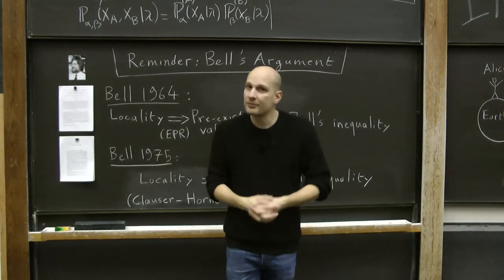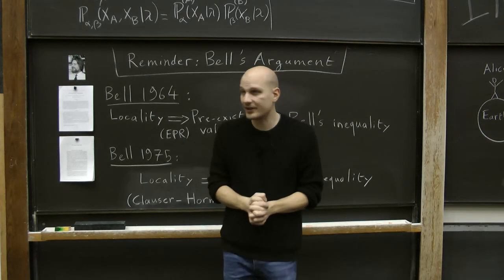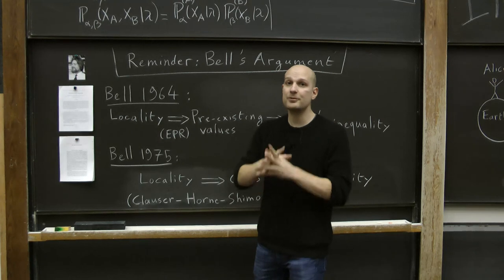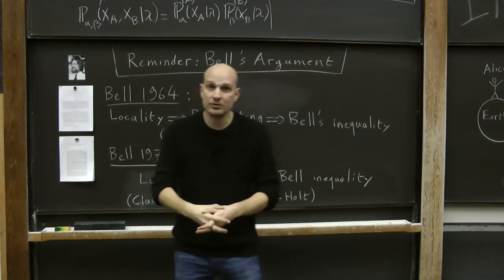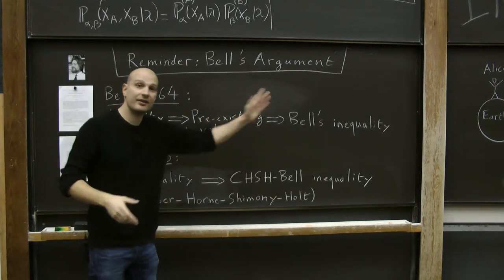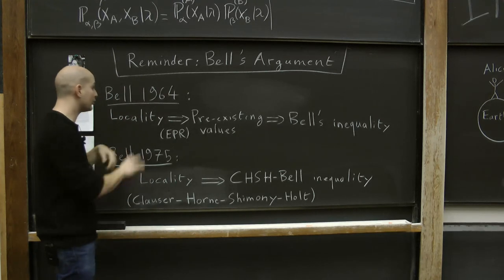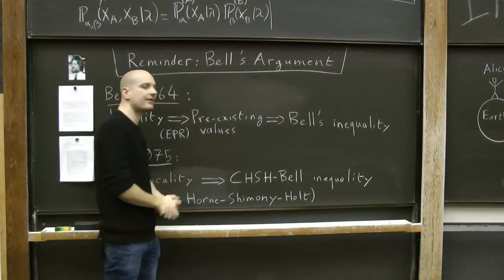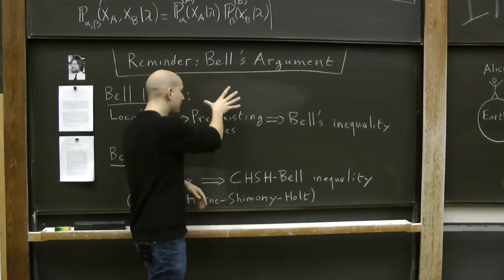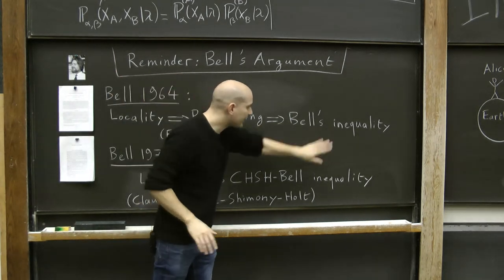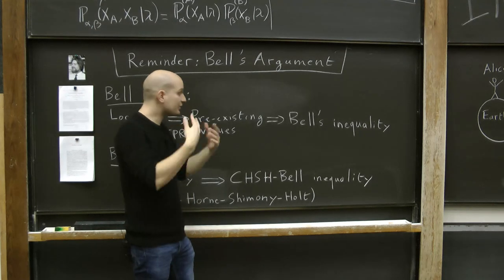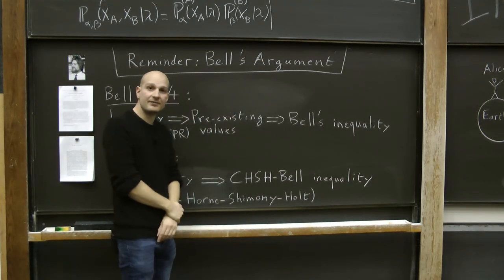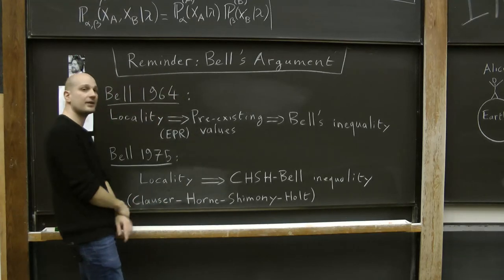Let's start with a brief reminder of the main point of the previous video: John Bell, in a 1964 paper, proved that quantum mechanics is not local, following this chain of implications—locality through the EPR argument implies pre-existing values for spin, but pre-existing values for spin implies Bell's inequality. Since quantum mechanics violates Bell's inequality, there are no pre-existing values for spin and therefore no locality.